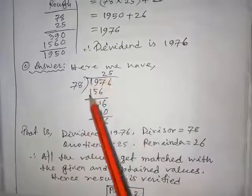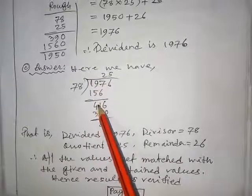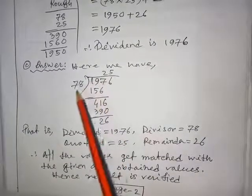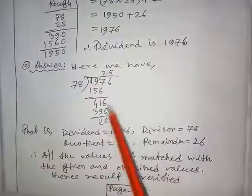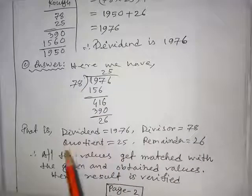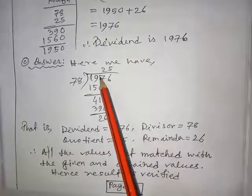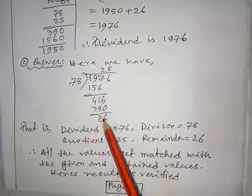Two times it will be 156, remainder is 41. Take this 6 here, it will be 416. Take 5 times 78, it will be 390. Remainder is 26. If you look very carefully, this is the dividend, this is the divisor, this is the remainder, this is the quotient.